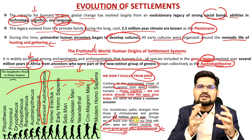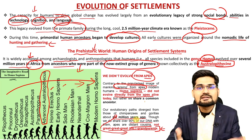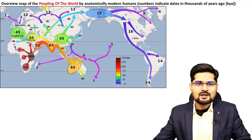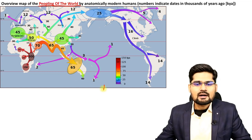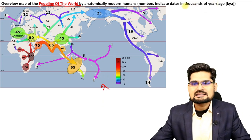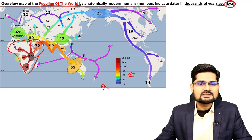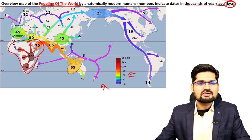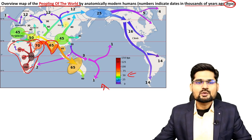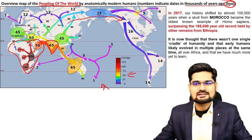We discuss evolutionary history because the evolution of humankind is directly related to the evolution of settlements — it's when people felt the need to settle at a particular place. Looking at the world map, we see the peopling of the world, where people settled in different parts at different times. The African continent was peopled 200,000 years ago, then 150,000, then 50,000–45,000 years ago, and the Indian Subcontinent was peopled around 65,000 years ago — waves of migrations.